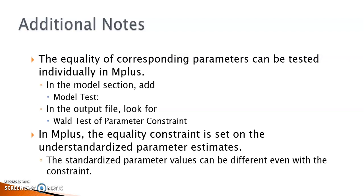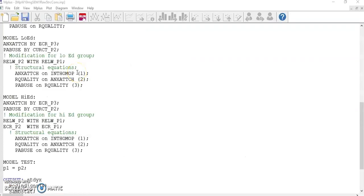First, if you would like to obtain a test on whether a parameter is invariant across groups, you can request it in the Mplus command file. For example, if I'm interested in testing whether the path coefficient from internalized homophobia to attachment anxiety is significantly different between the low-add and the high-add groups because their values in the unconstrained models appear to be very different.